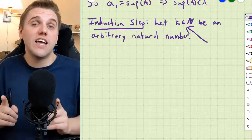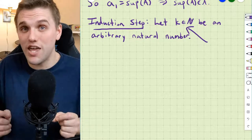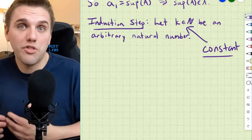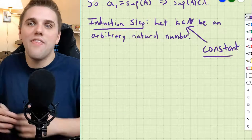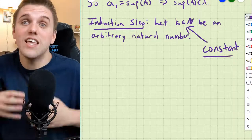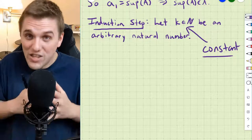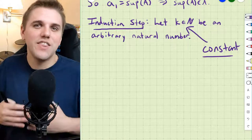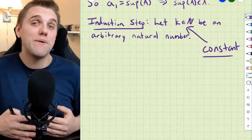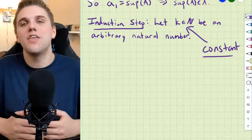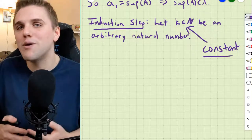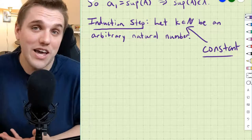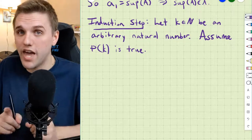K has been instantiated; it does not vary. Think of K like a curtain with something behind it — with constants, the thing behind the curtain doesn't change; with variables, it varies. Now we're going to assume that P(K) is true. I want to clarify: K is a constant, so we're not assuming P(K) is true for all natural numbers K — we're assuming P(K) is true for this one specific constant K.